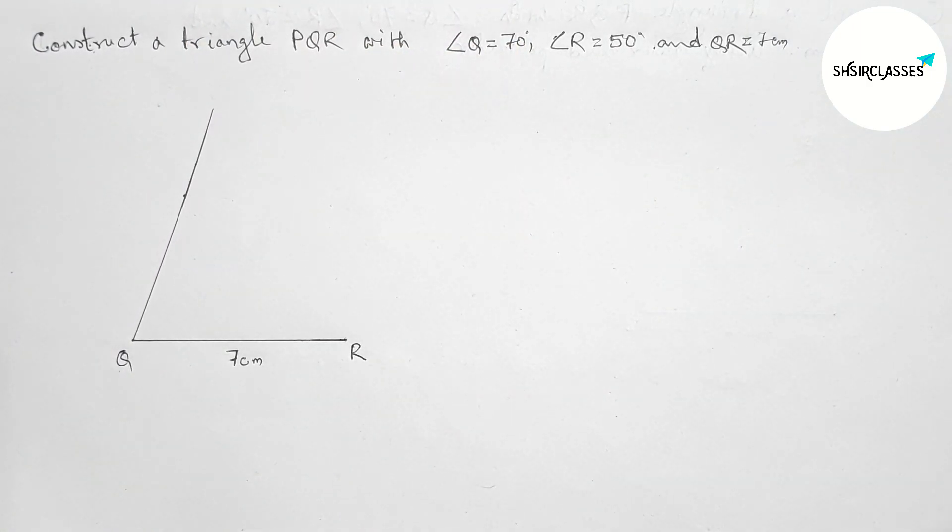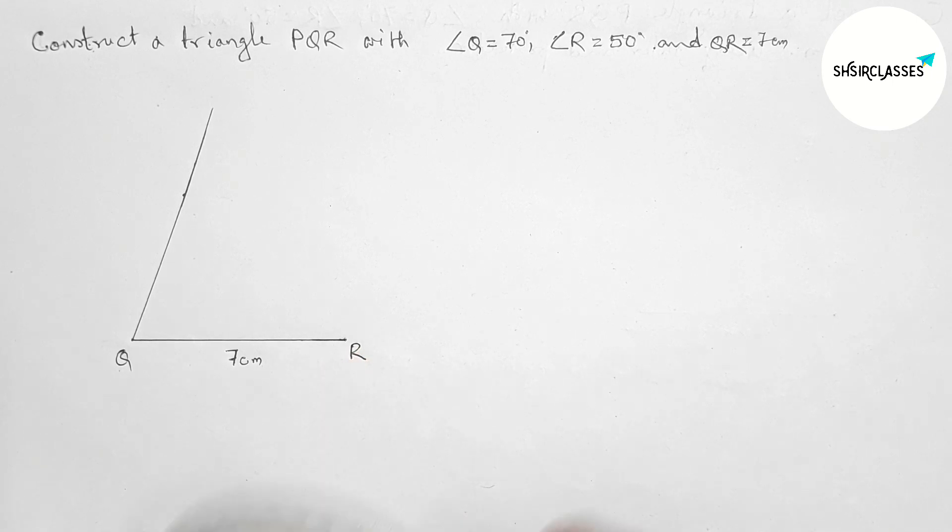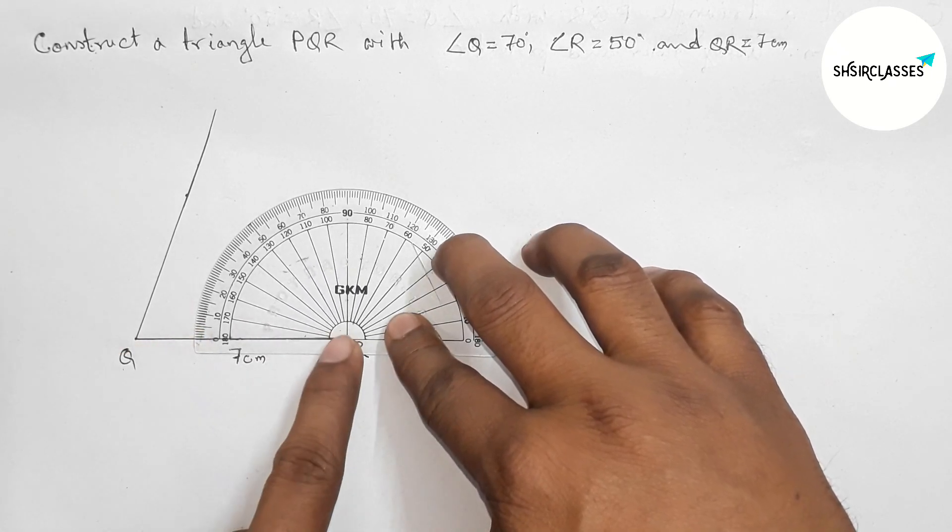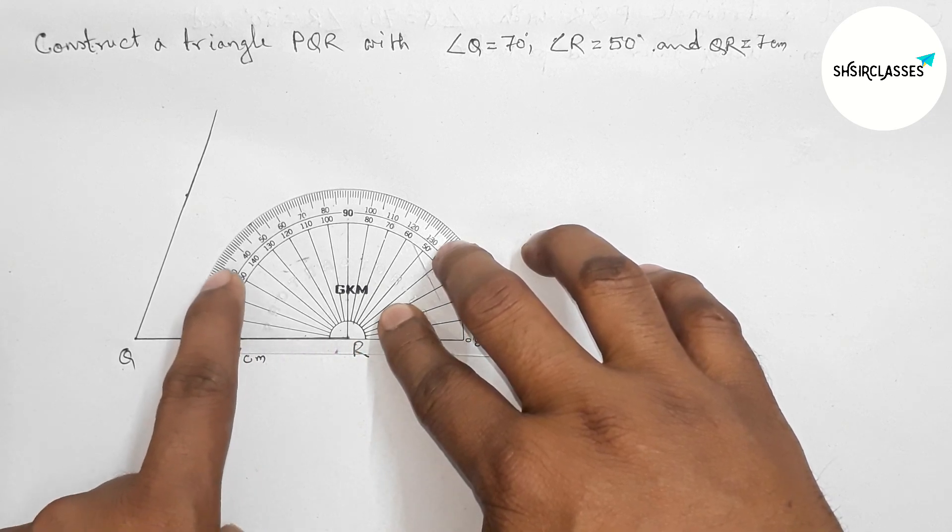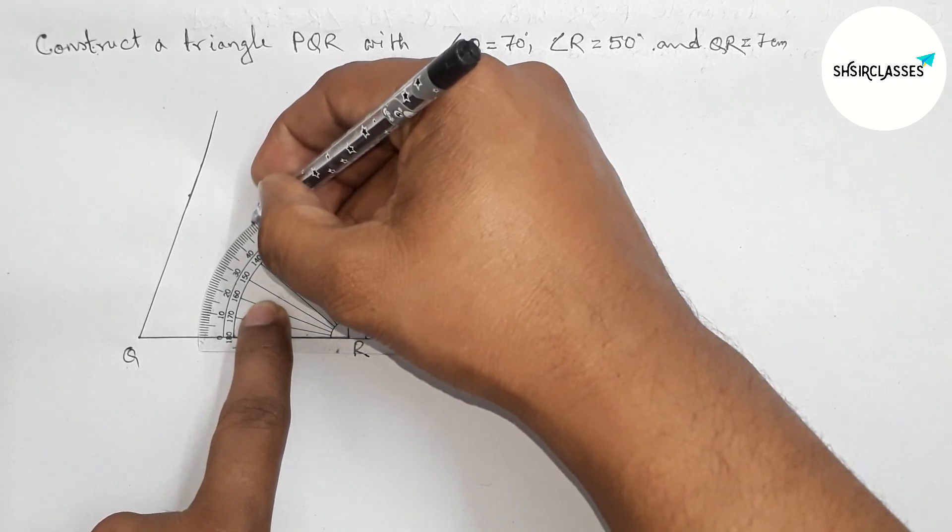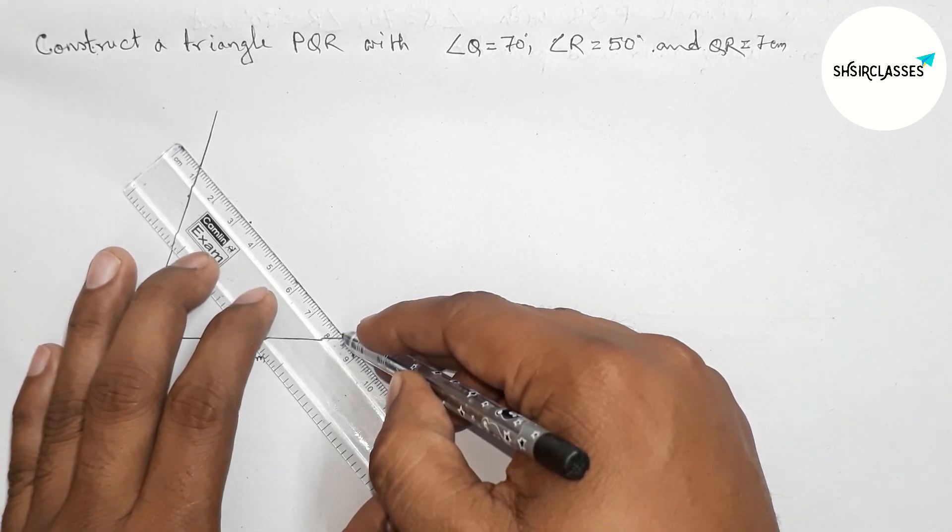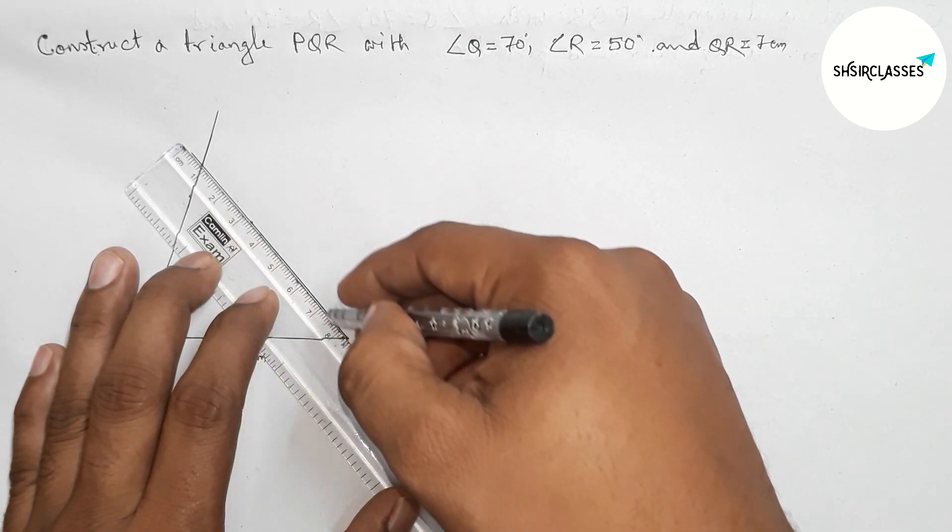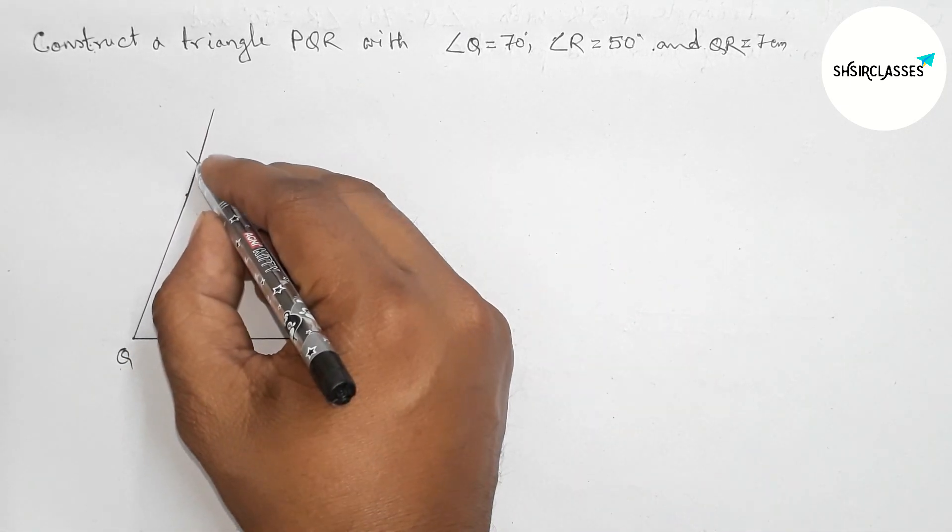Next, drawing a 50 degree angle on the point R with the help of a protractor. So putting the protractor on the point R perfectly, then counting 50 degrees. So this is a 50 degree angle. So now marking here, this is 50 degrees. Next, joining this line to get here a 50 degree angle.